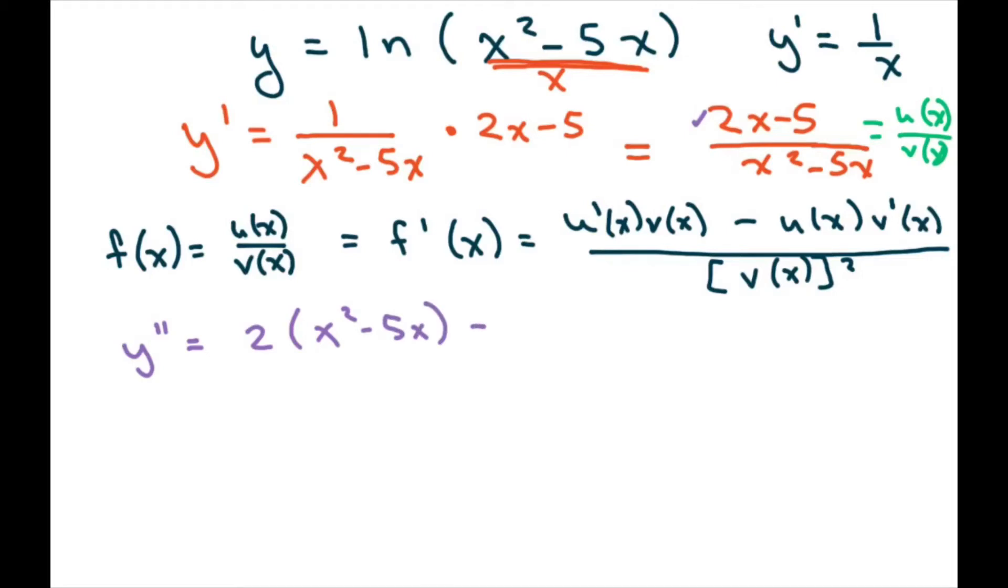and the minus is going to be ux, which is 2x minus 5, times the derivative of v of x, which is 2x minus 5. And then you just take your denominator, which is x squared minus 5x, and square it.